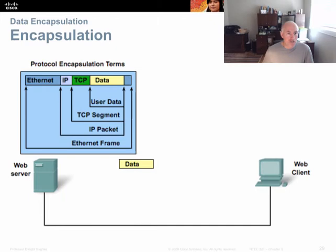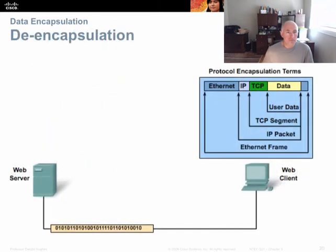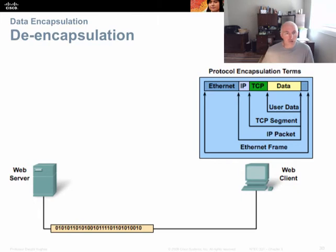Once fully encapsulated, the message is sent out on the wire as ones and zeros — as light pulses down fiber optic cables, electrical pulses down copper cable, or radio frequency cycling in Hertz across the air. On the receiving end, it must be de-encapsulated: the ones and zeros are returned back to the original message by removing the various layers of encapsulation that were applied.